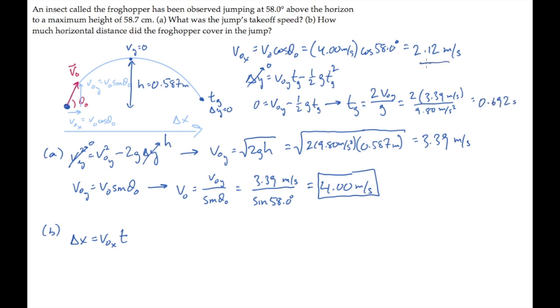Now we know how fast the insect moves sideways and how long it spends, so we can come down here and multiply those together to find the horizontal distance that it covers. And that works out to 1.47 meters.